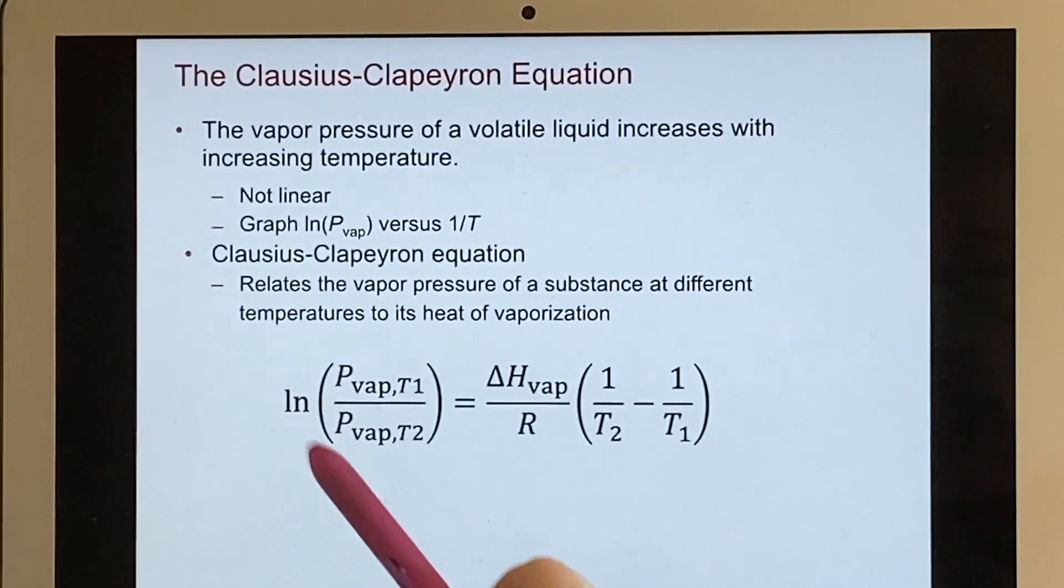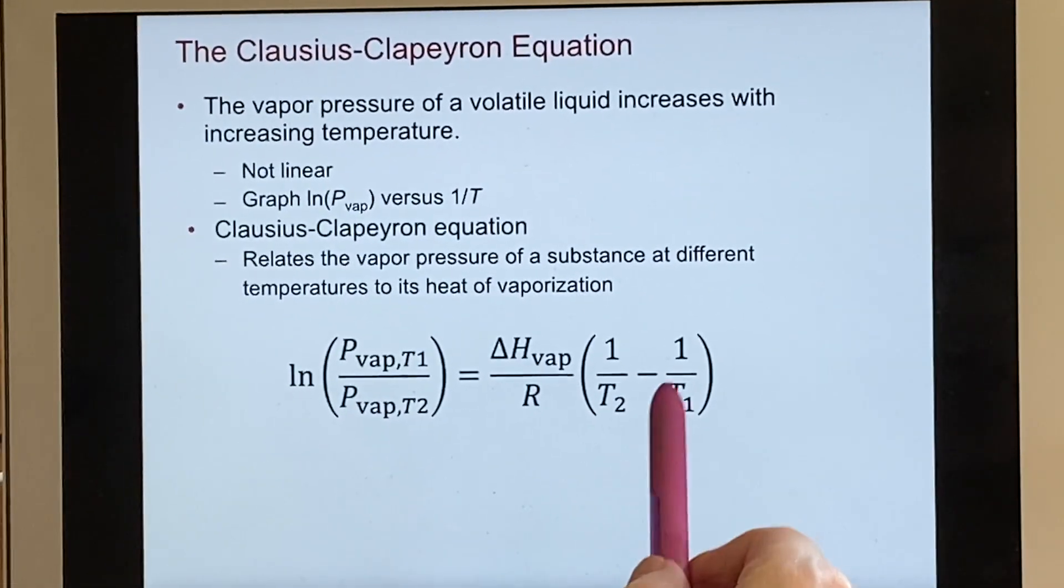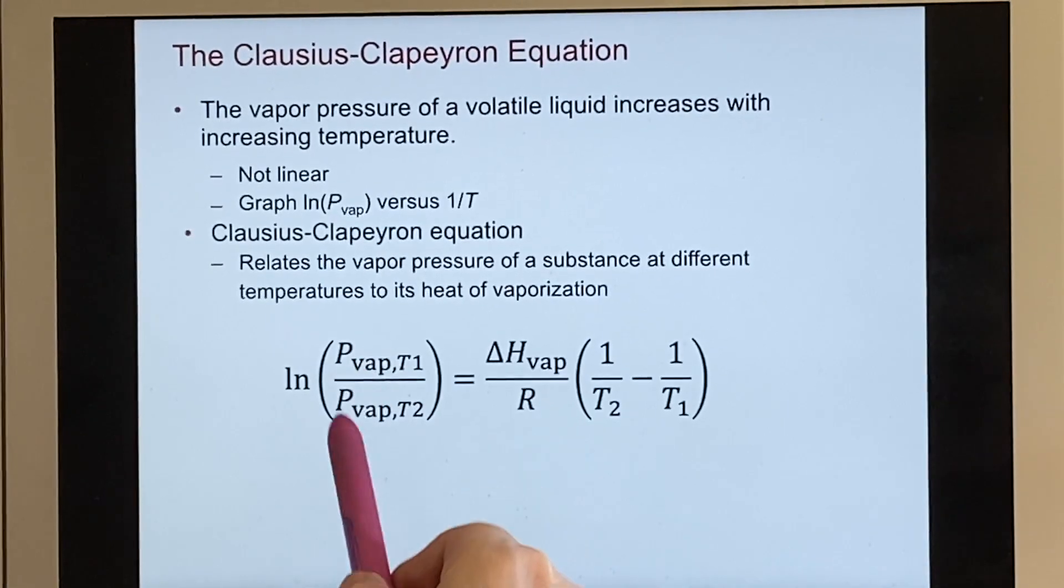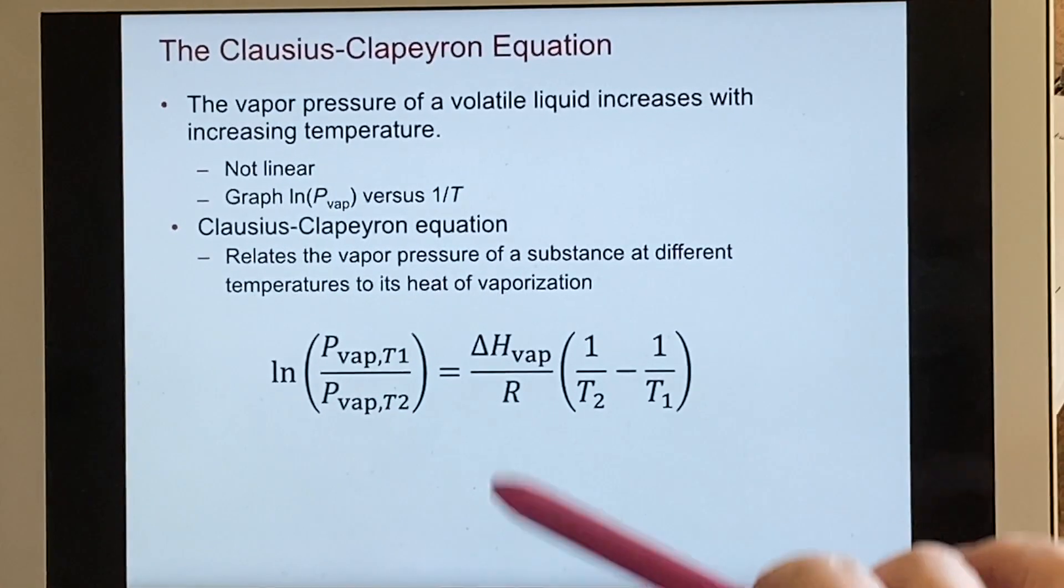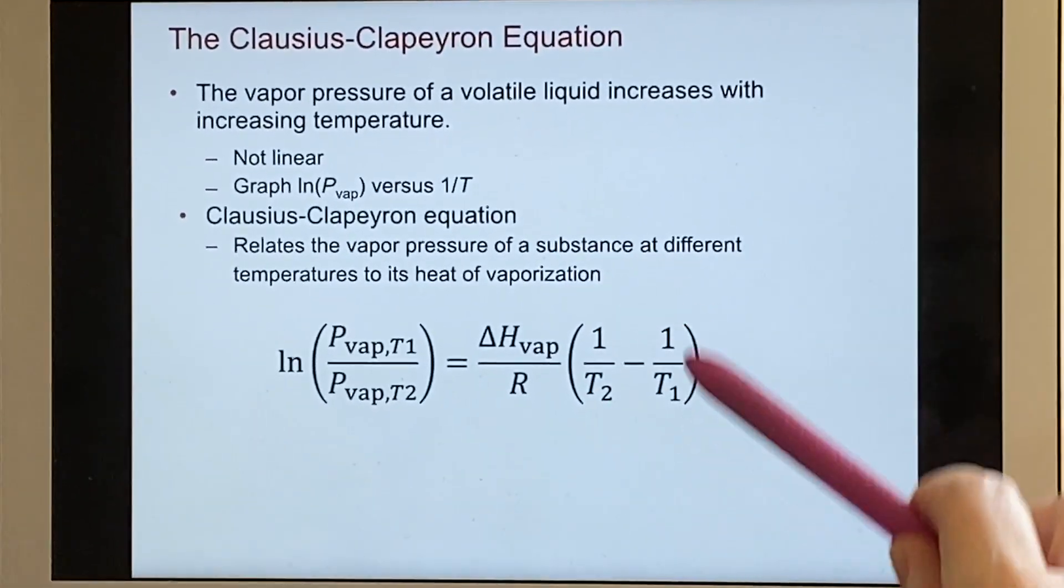But you can see that as far as the variables, you have temperatures, you have pressures, and then you have delta H vaporization, which is going to depend on what the substance is.